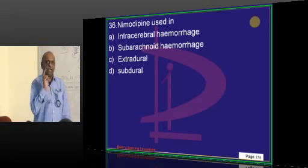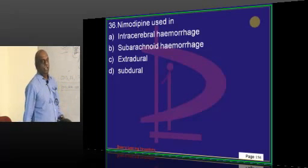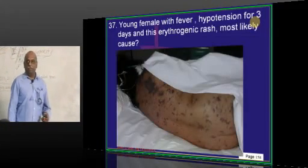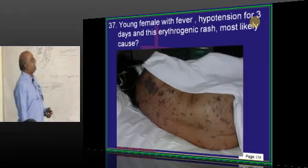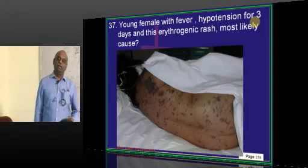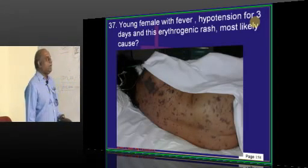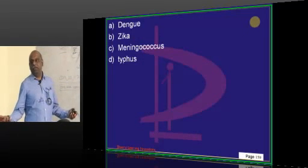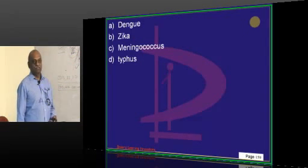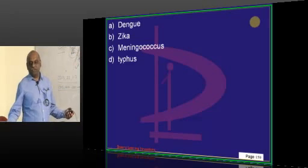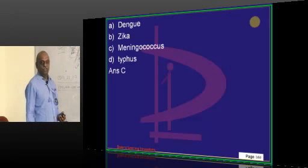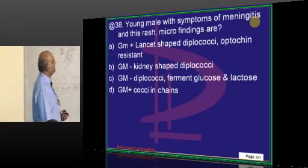A young female with fever and hypertension for three days with erythrogenic rash - recognize that it is meningococcus. Classically, Waterhouse-Friderichsen syndrome is associated with meningococcemia.